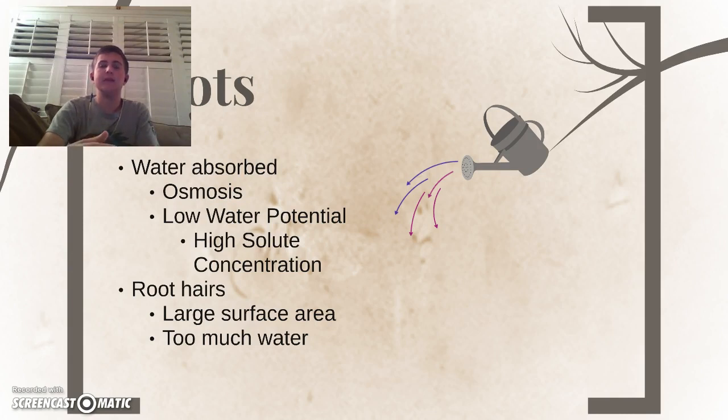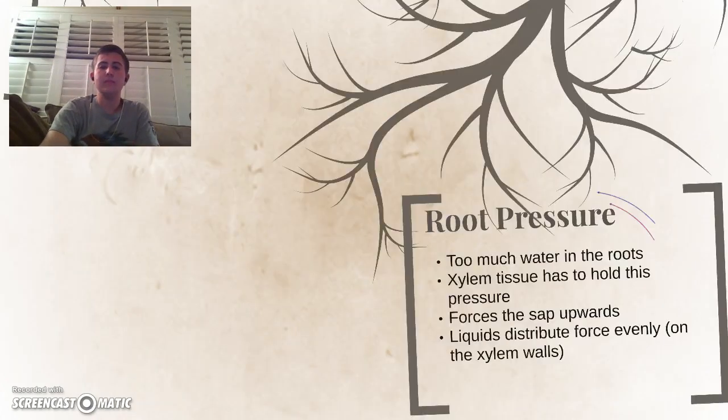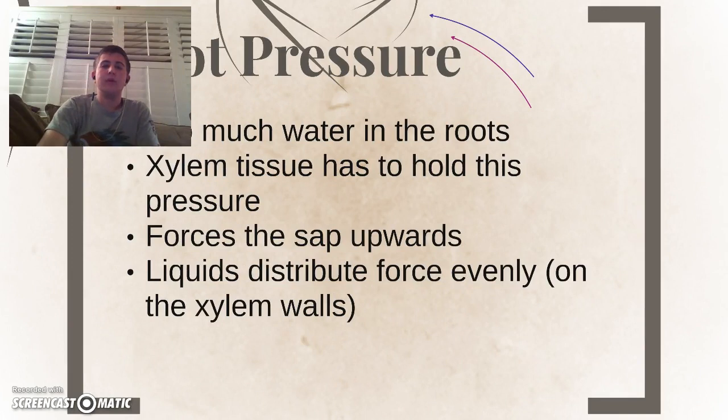The result is that too much water enters the xylem. The xylem starts in the roots, and when the roots absorb too much water, or absorb an abundance of water, it creates this pressure. And that's another force that creates pressure within the xylem. So, this creates root pressure, and at the opposite end, this is when too much water is in the roots. The xylem tissue has to hold onto this pressure, and accordingly forces the sap upwards.